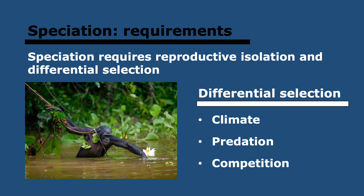Reproductive isolation means the species are separated so they can't interbreed. If they interbreed, they will continue mixing their genes and the species will not divide into two. You also need differential selection. What is differential selection? You need selection to act on each population in different ways, because if it acts the same way, they'll keep being the same species. Factors that contribute to differential selection include climate, predation, and competition. For example, with climate: if you live at the same temperature, you won't be adapted to have more fur than the other population. However, if one population moves to a colder climate, they might start to adapt to have more fur, because those that do will survive in the colder weather.